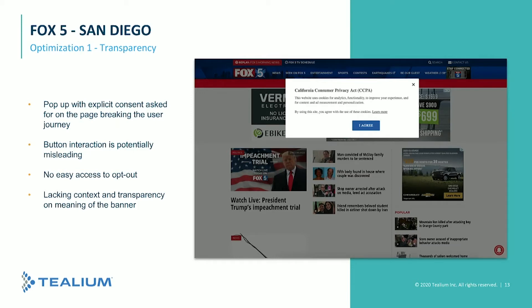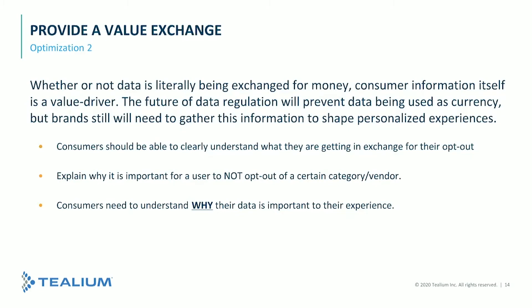There's no easy access to opt out — no clear button interaction for that and no text description. In terms of the transparency optimization, there's also a lack of context explaining why a banner is shown or why the user journey is now interrupted. If you have this type of implementation, you should immediately look at exchanging that intrusive pop-up for a banner that doesn't break the user journey.